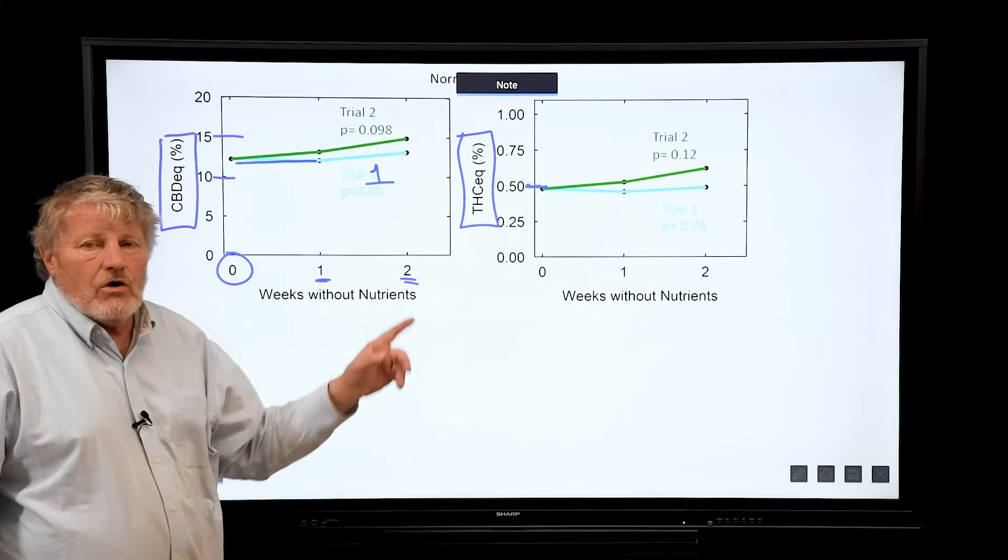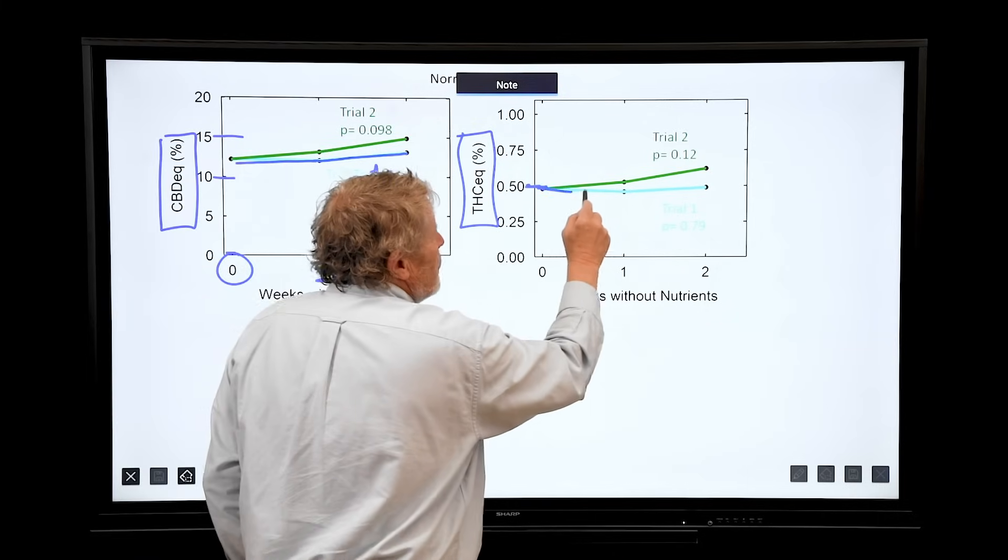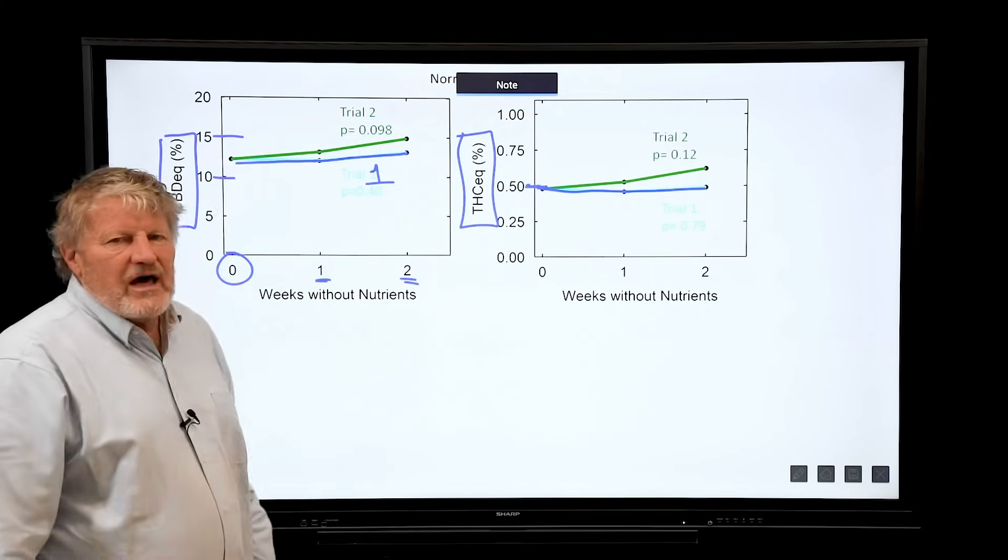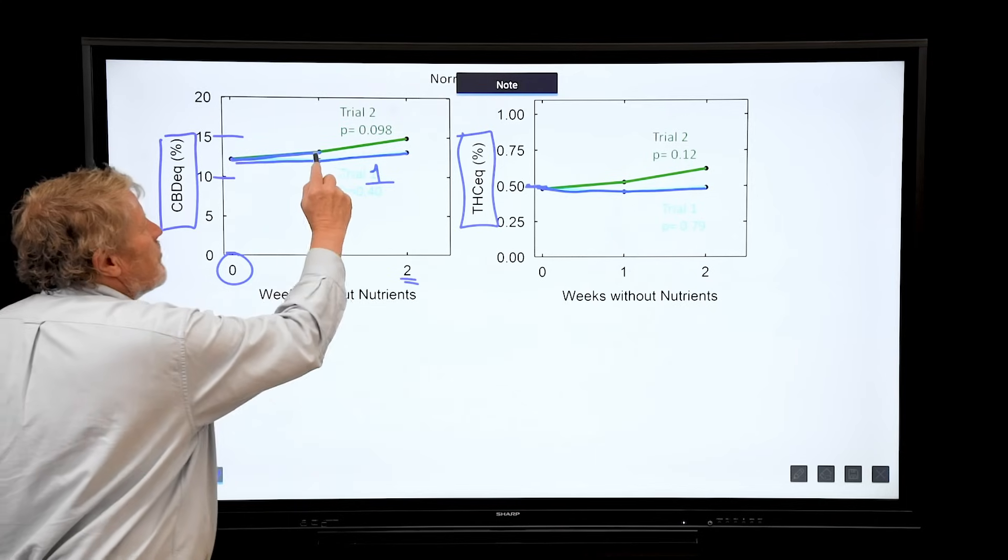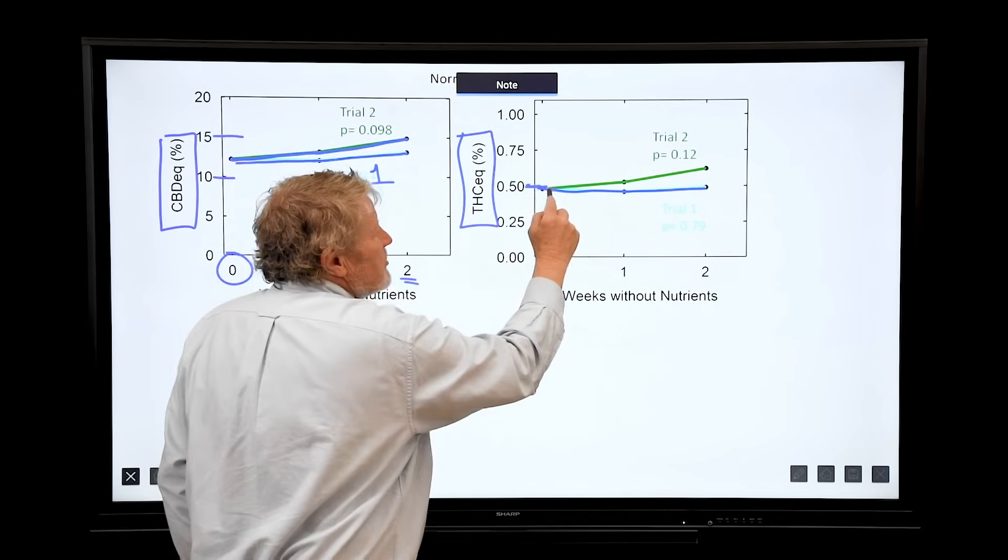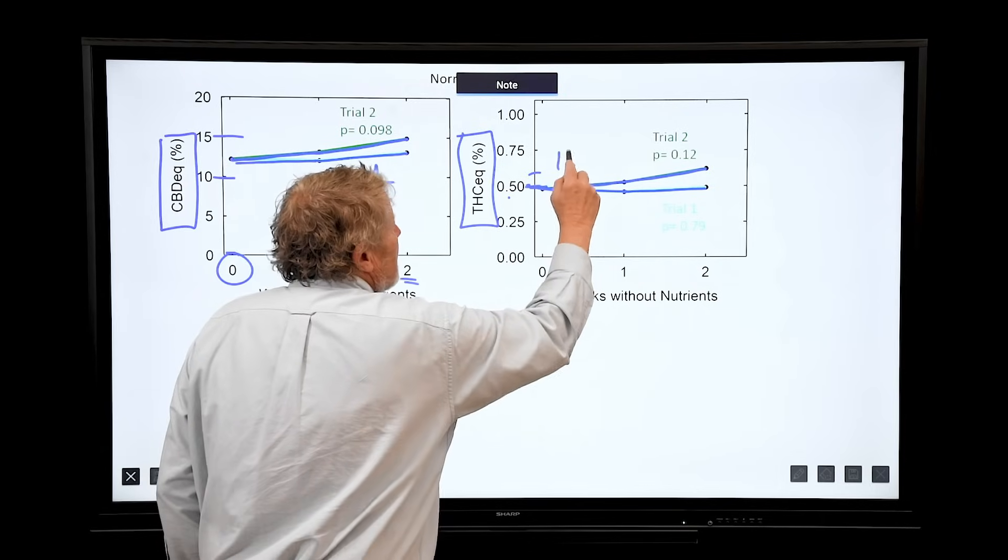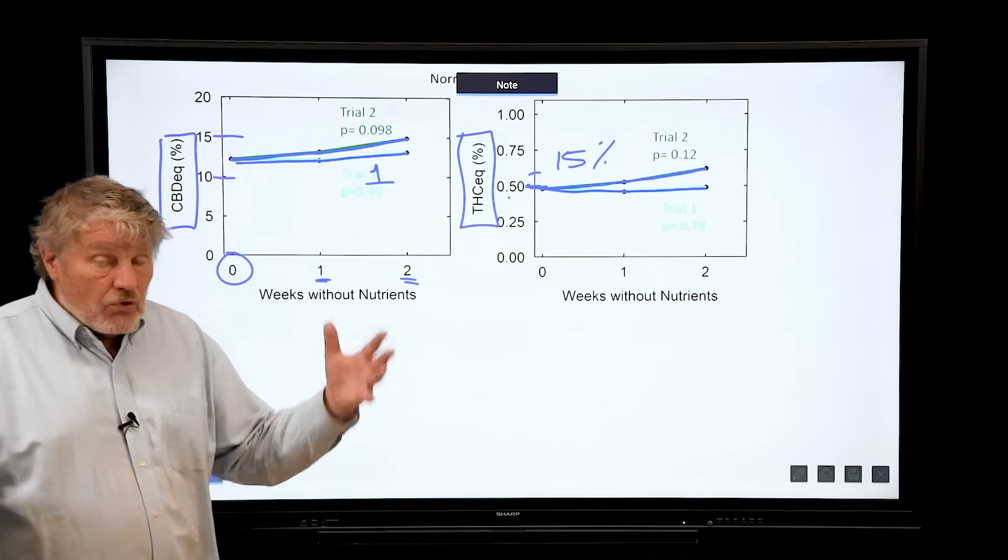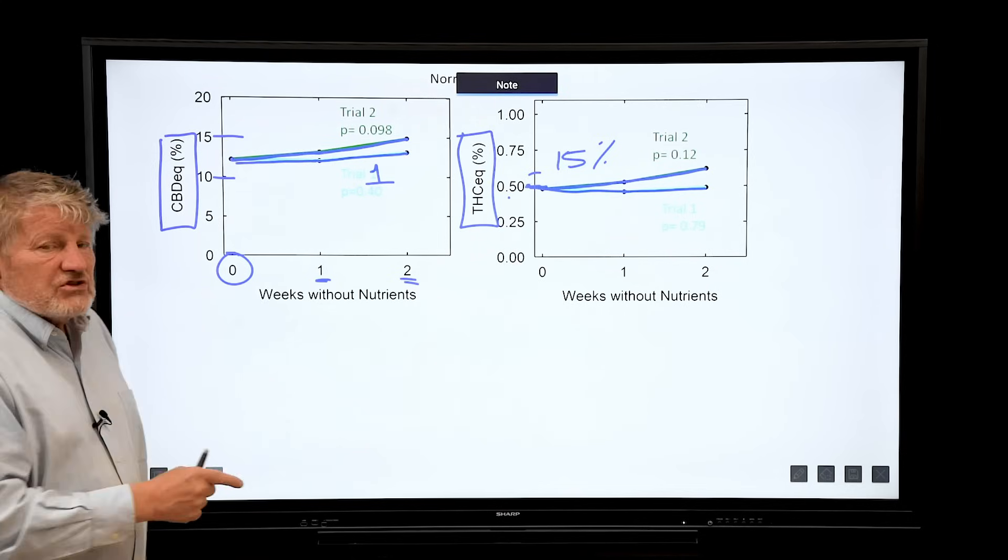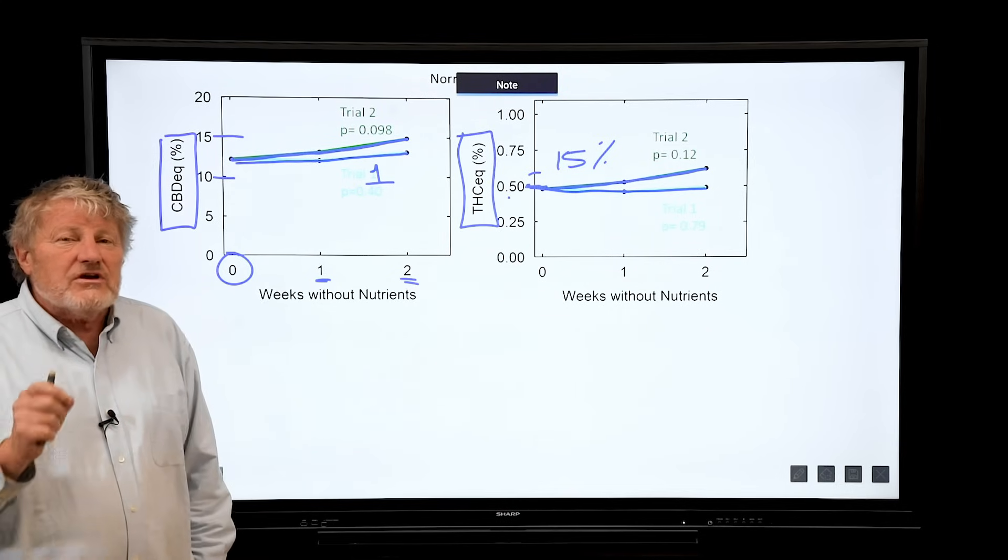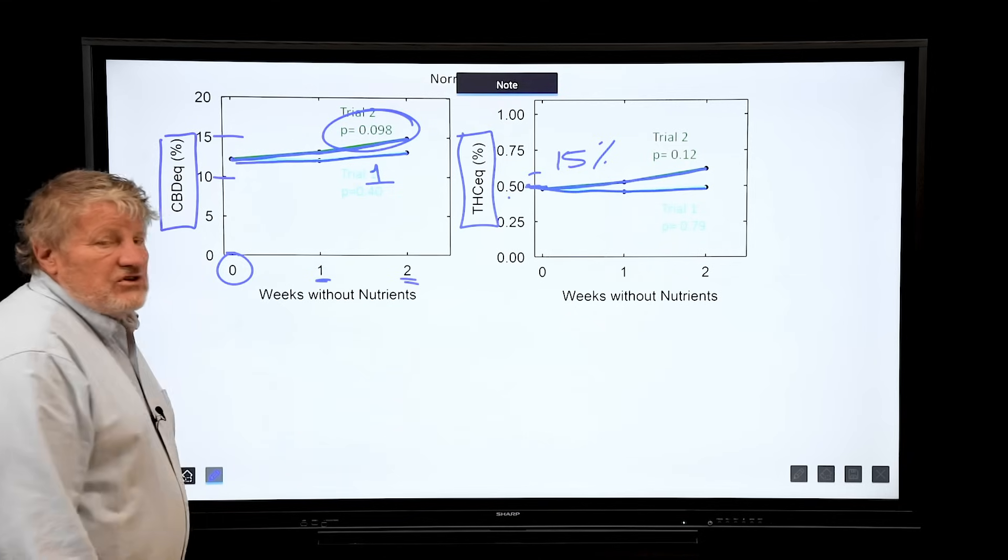In study one there was a minimal effect of removal of nitrogen, almost a completely flat line. We did the study again, repeated it, and in study two there's an upward effect, and in both THC and CBD it's slight. But this effect right here can be about 15 percent, which is important to consumers. It's an important difference. The challenge is associating this difference with statistical significance so that we're sure that it's a reproducible effect. We run lots of statistics. The p-value indicates the probability that this could have happened by chance.